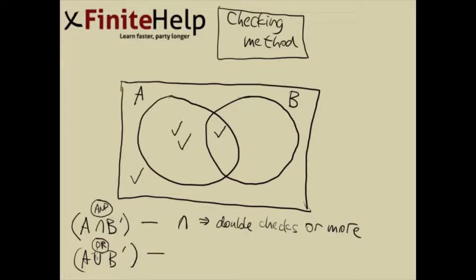Since union is going to include everything from A or anything from B prime, that means anything with one check or more is going to be included in this new set. So union is single check or more.